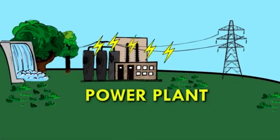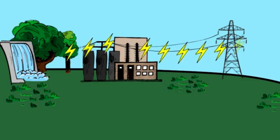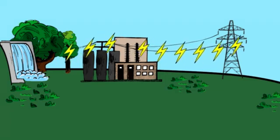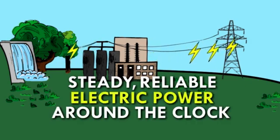Electricity is generated at a power plant or other facility, such as a hydroelectric dam. In fact, most of the country's electricity comes from power plants that can generate steady, reliable electric power around the clock.